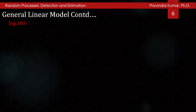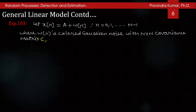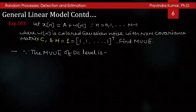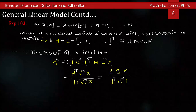Let us take one example. Let x(n) equal A plus omega(n) for n from 0 to N minus 1, where omega(n) is colored noise with N-by-N covariance matrix C, and H equals the column vector of all ones [1, 1, ..., 1] transpose. Find the MVUE. The MVUE of DC level A cap equals inverse of (H transpose C inverse H) times H transpose C inverse X, which simplifies to H transpose C inverse X divided by H transpose C inverse H, and since H equals the ones vector, this is 1 transpose C inverse X divided by 1 transpose C inverse 1.